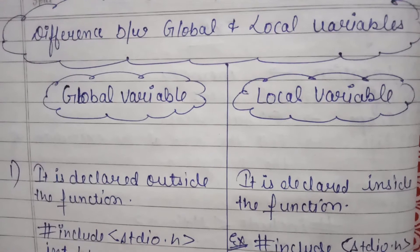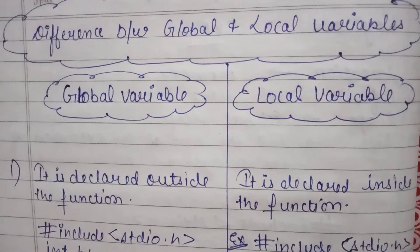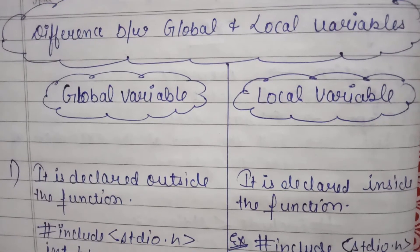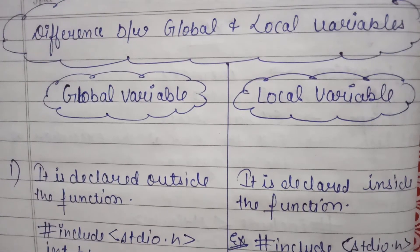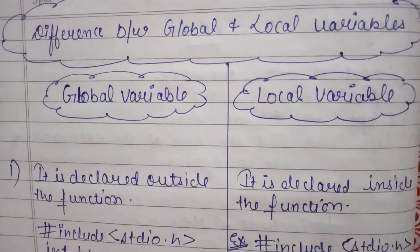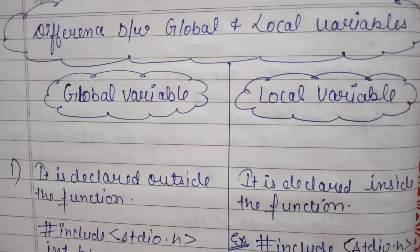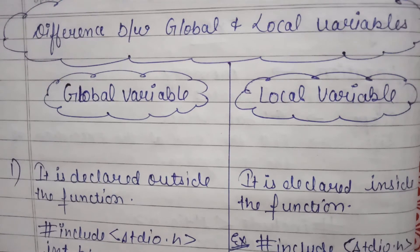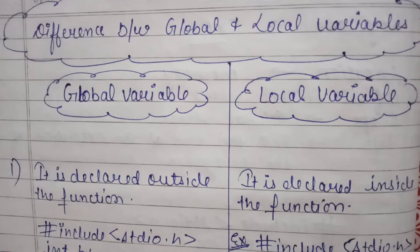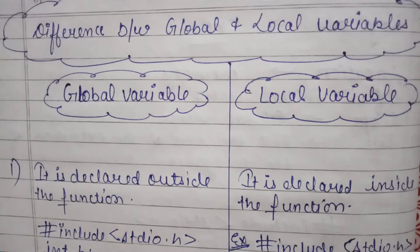In previous videos we have studied storage classes like external storage class, automatic, register, and static storage classes. We use variables inside the void main function with the help of automatic, static, and register storage classes.